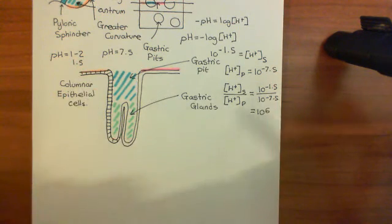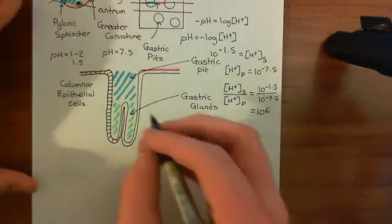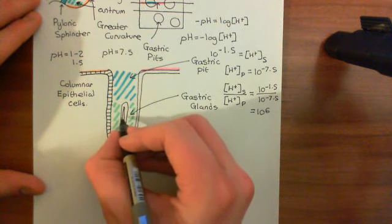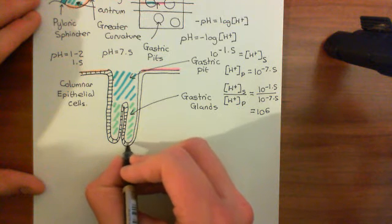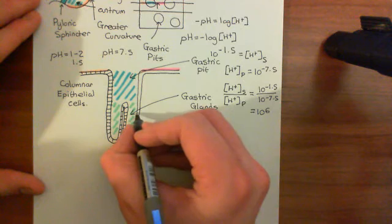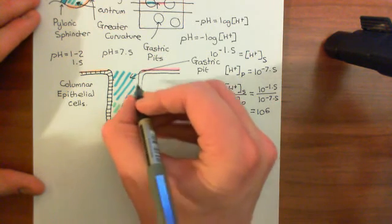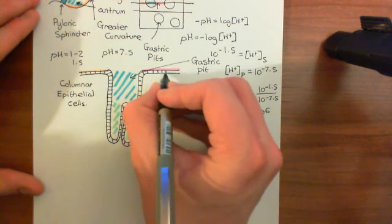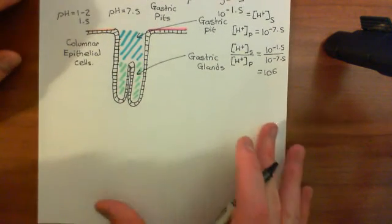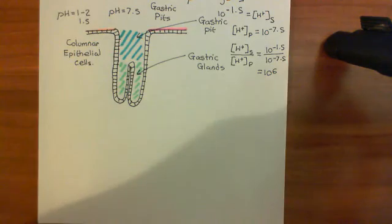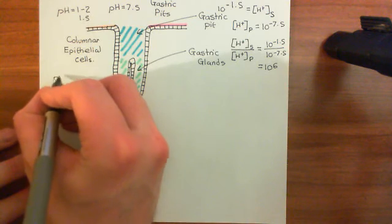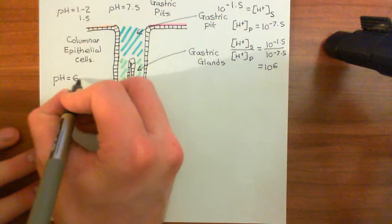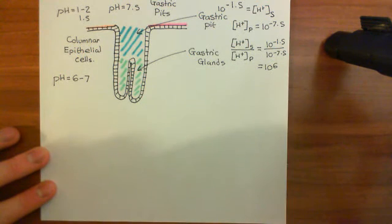There is an extremely high proton concentration in the lumen of the stomach. The columnar epithelial cells lining the surface are exposed to this extremely low pH environment. To protect themselves, they secrete mucus onto their apical surface — the surface facing into the lumen — which provides a buffer zone. They also secrete bicarbonate anions (HCO3⁻) into that mucus to maintain its pH between 6 and 7, compared to the lumen pH of 1 to 2.